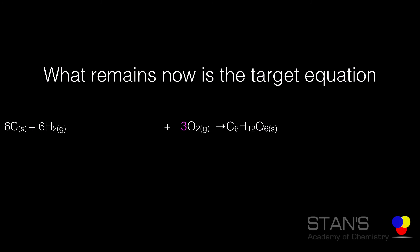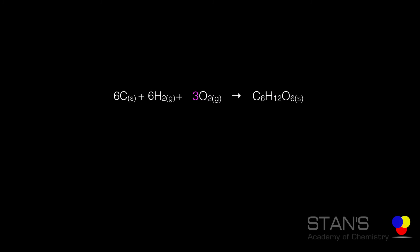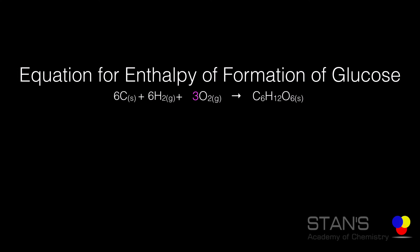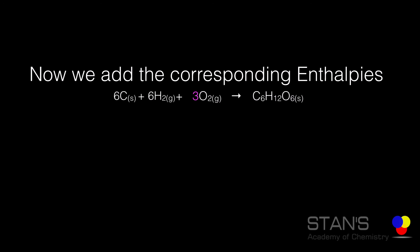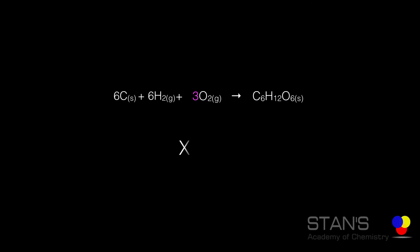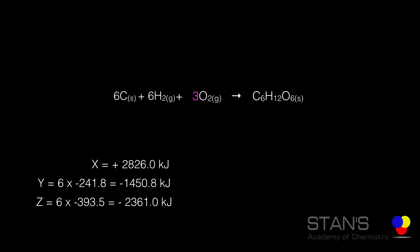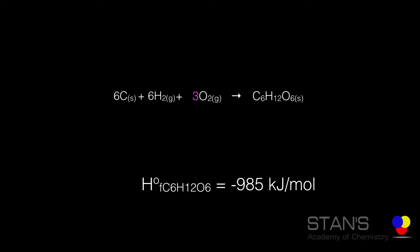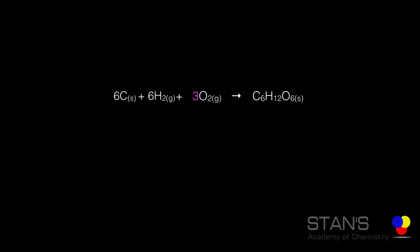What remains is the target equation, which represents the formation of one mole of glucose from its elements. Now we add the corresponding enthalpies: the flipped combustion enthalpy is +2826 kilojoules; the enthalpy of formation of six moles of water is 6 × (−241.8); and the enthalpy of formation of six moles of carbon dioxide is 6 × (−393.5). Adding these three values together gives minus 985 kilojoules per mole, so the standard enthalpy of formation of glucose is minus 985 kilojoules per mole.